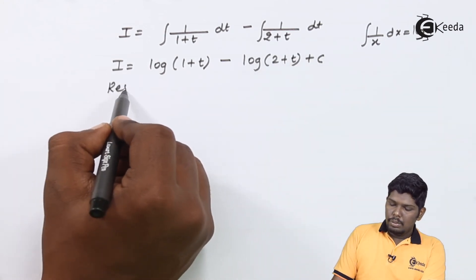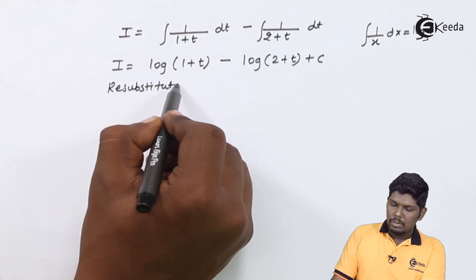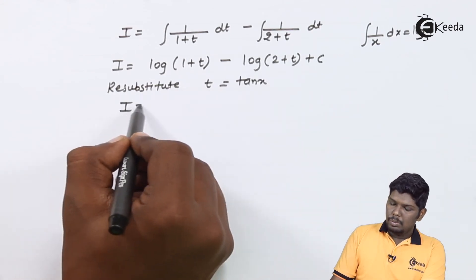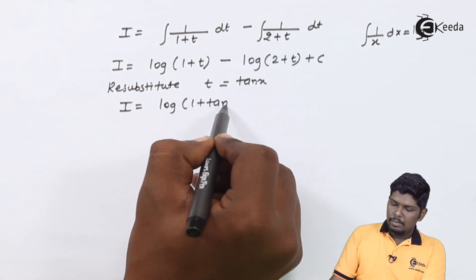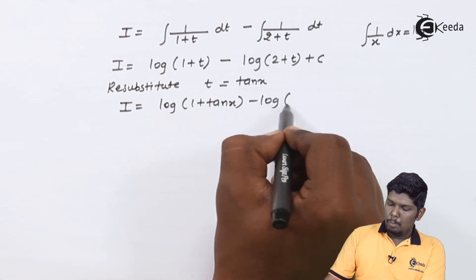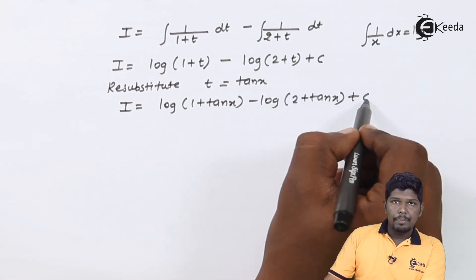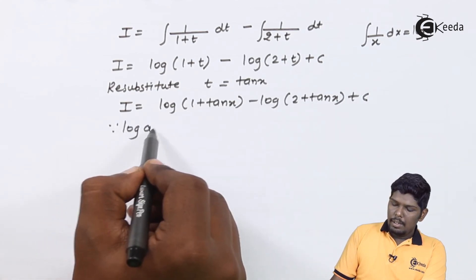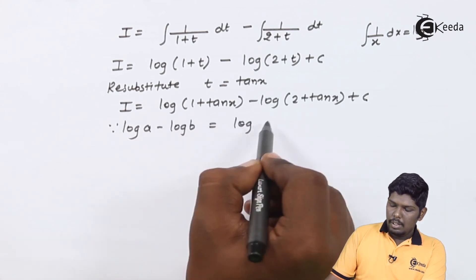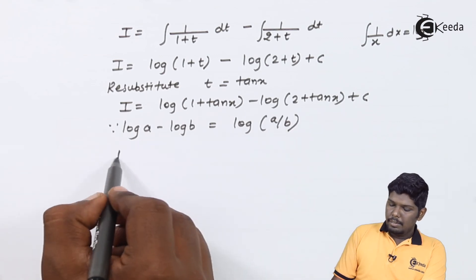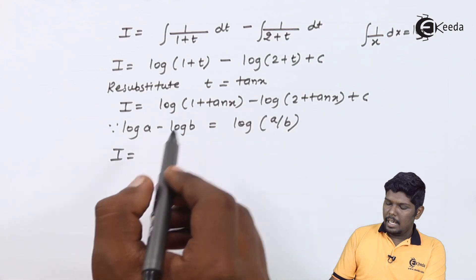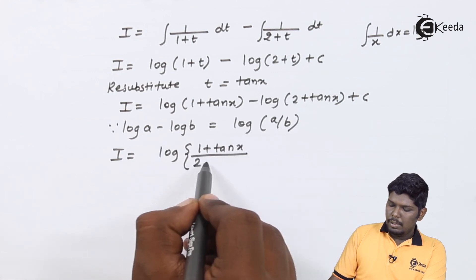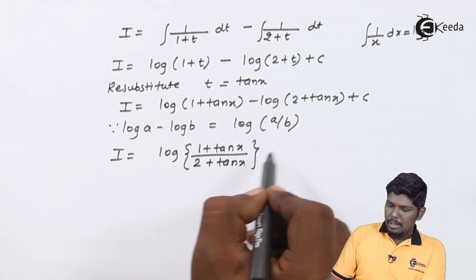Now we re-substitute t = tan x. This gives log|1 + tan x| - log|2 + tan x| + c. Using the formula log A - log B = log(A/B), the final answer is log|(1 + tan x)/(2 + tan x)| + c. This is the integration of the given function.